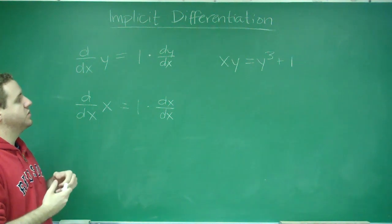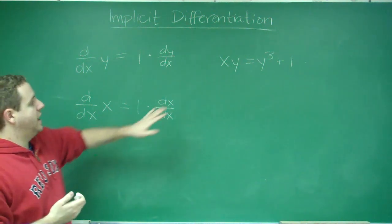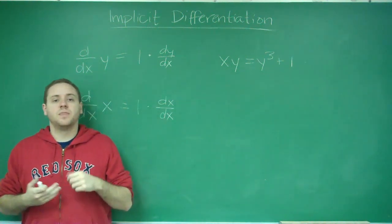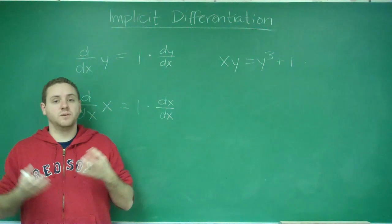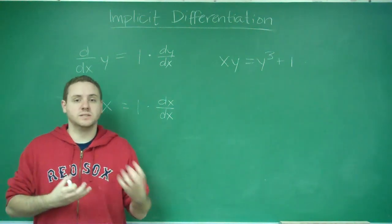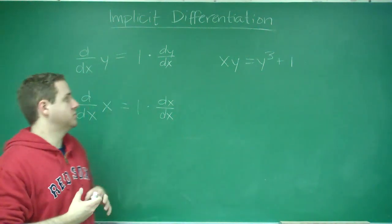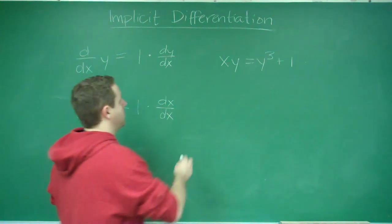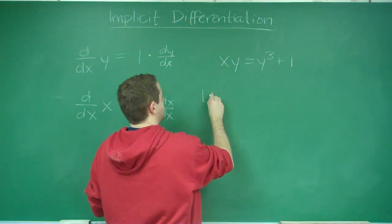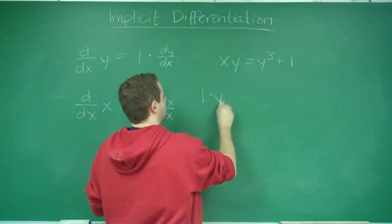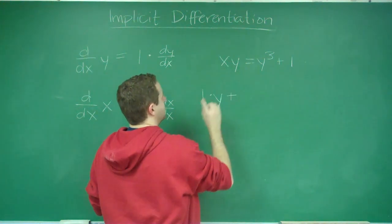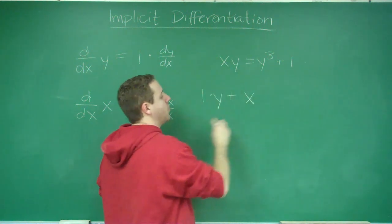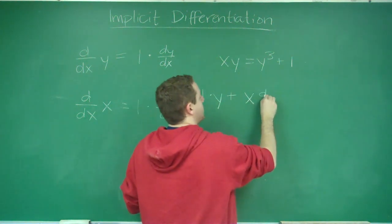We're going to take our derivatives. When you have a term like xy, that is a product of two different functions, x and y, so you have to use the product rule. Using the product rule, we would get 1 times y plus x times the derivative of y, which is dy/dx.